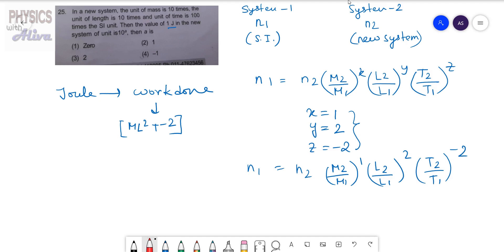Now observe: it is said that in SI system the value is 1 joule. We are taking the system 1 as SI, so we will write here 1 joule. We have to calculate the n₂. n₂ in system 2 is 10 to the power a. It is said in n₂, in the system 2, it is 10 to the power a.